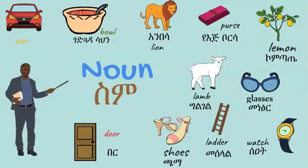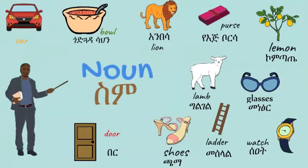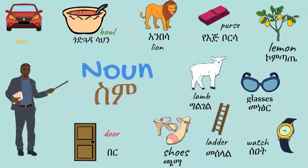A noun is the name of something. When I call, for instance, the shoes, you will not remember a car — you will remember shoes. That means there is a difference between shoes and a car because a specific name is given to one object. When we say shoes, something that comes to your mind is shoes that you put on your foot. That's what we call a noun. Whenever you call that name, you remember something.